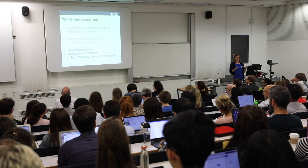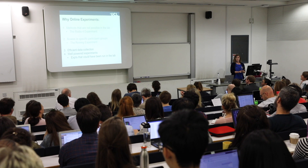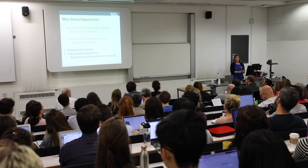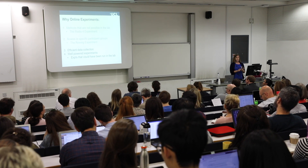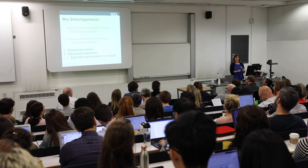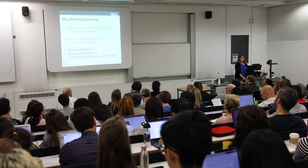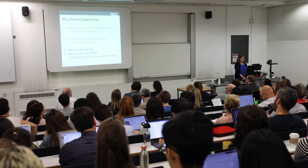Data quality became a real issue when we started running experiments online that we could have run in the lab — we were doing it for efficiency and better power, but there was no scientific reason not to use the lab. That gets you to a point where you really have to justify your choices, because reviewers will give you a hard time if they don't trust your data.